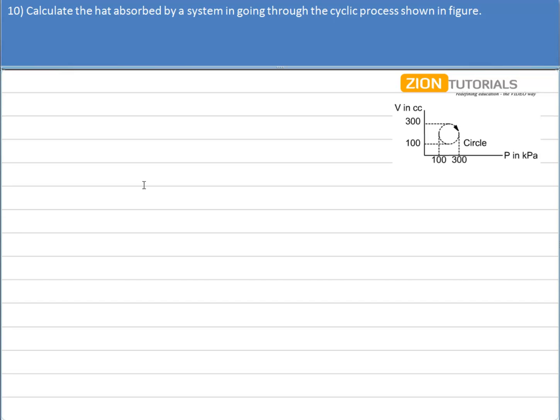Calculate the heat absorbed by a system in going through the cyclic process as shown in figure. First of all, I will tell you the concept that in a cyclic process, change in internal energy is zero because in cyclic process we are moving to the same point from where we are starting, so the change in internal energy will be zero.